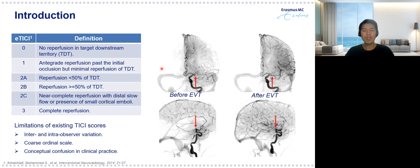However, such scores suffer from a couple of limitations. As the score is visually inspected, it suffers from inter- and intra-observer variation, and it is a coarse scale which is not very accurate. Another limitation is that although TK scores define brain tissue reperfusion, sometimes it is assessed based on vessel recanalization in clinical practice.